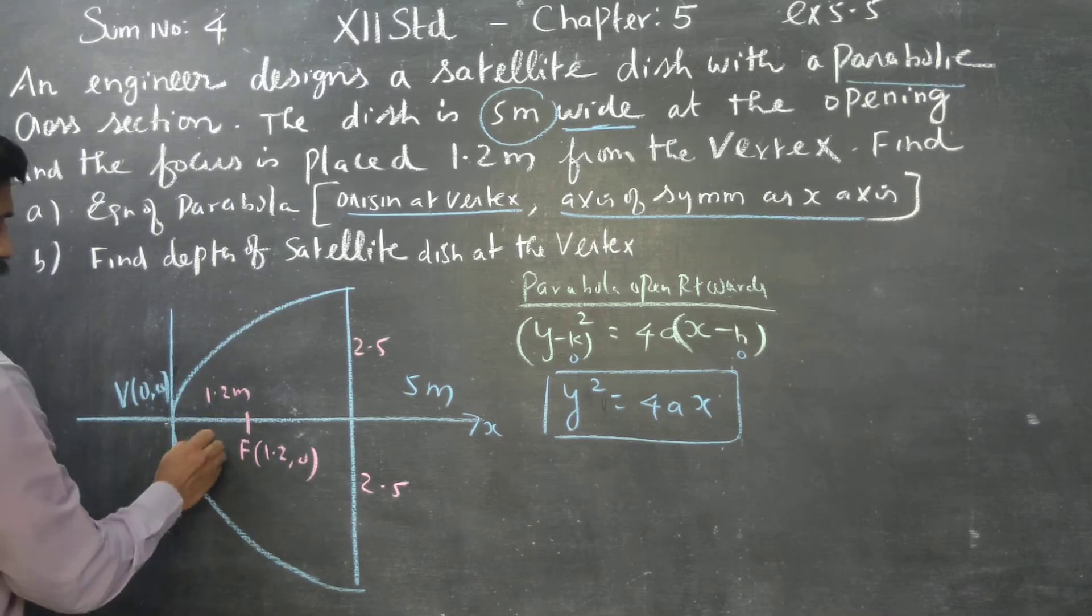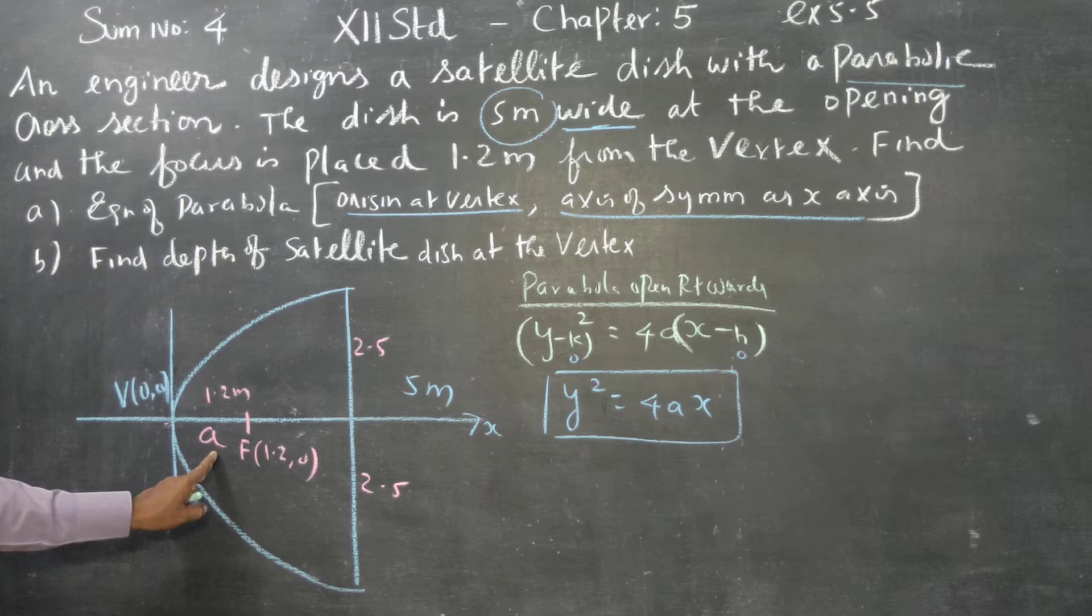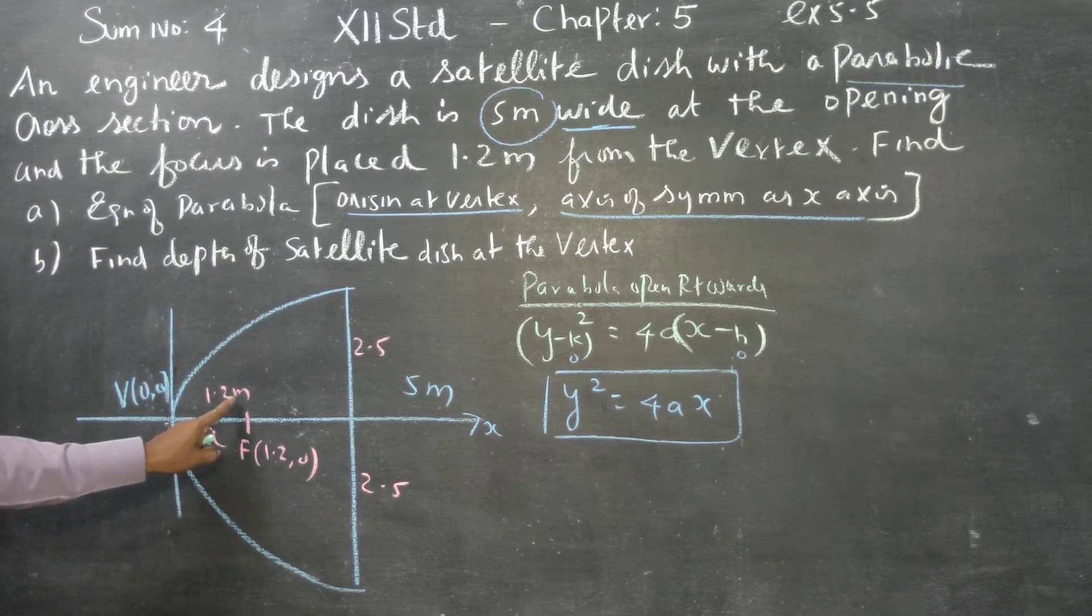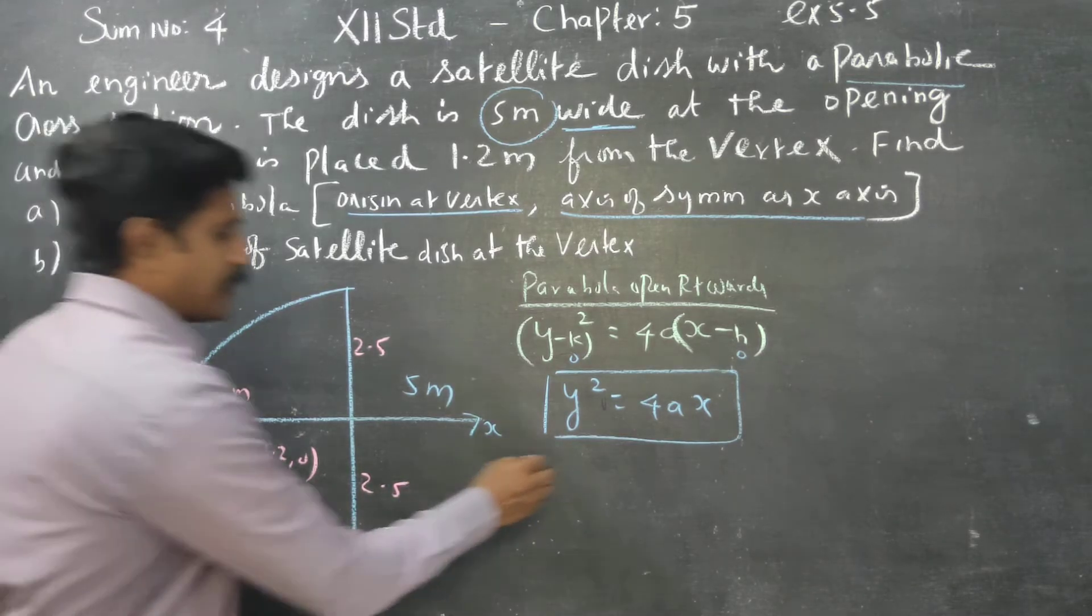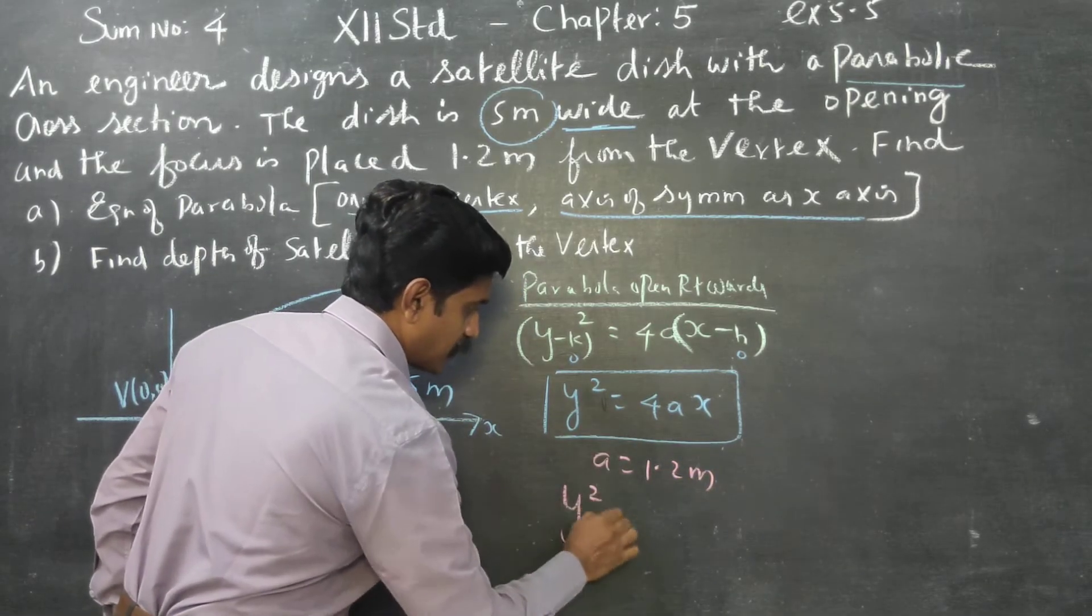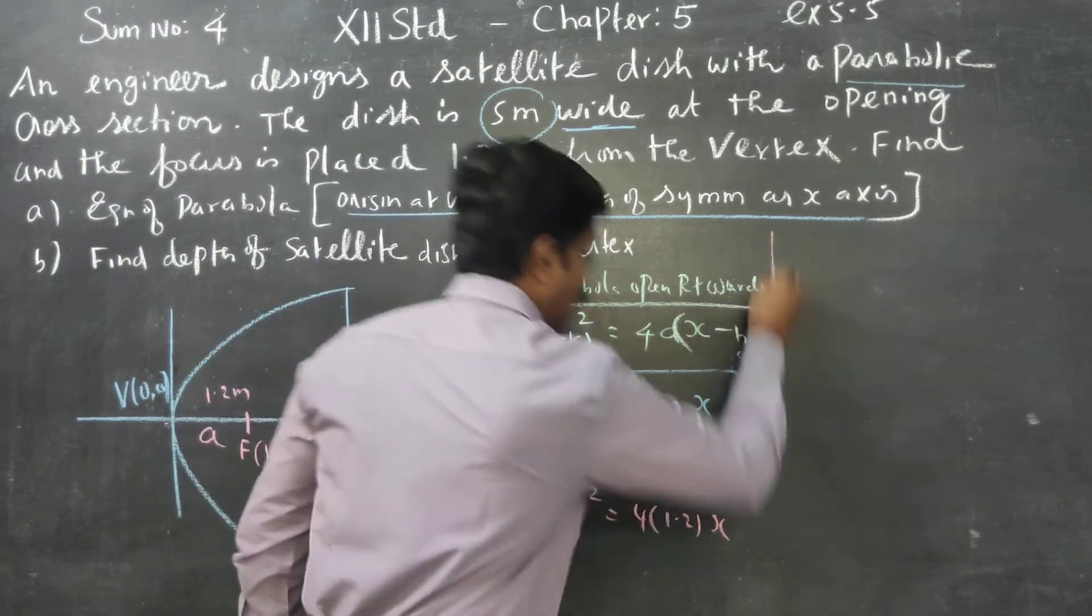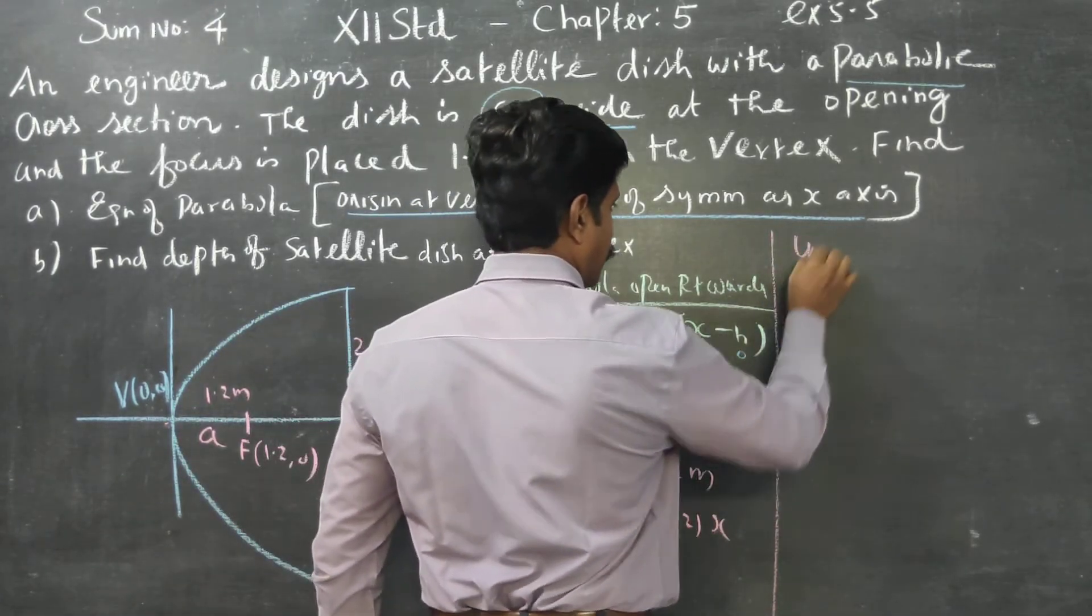Vertex level, focus is at 1.2 meters. Therefore, this is 1.2 comma zero. What is the distance between vertex and focus? This is called small a. Distance between the vertex and focus is called small a. Therefore, a is equal to 1.2 meters. Therefore, my answer will be y square is equal to 4 into 1.2 into x.